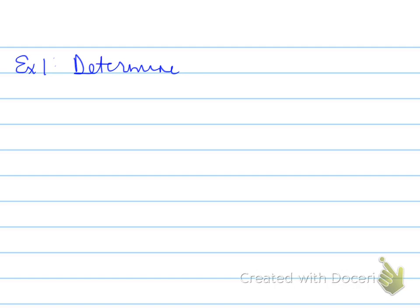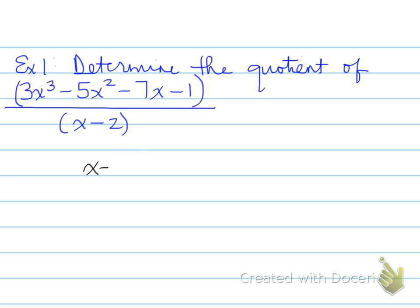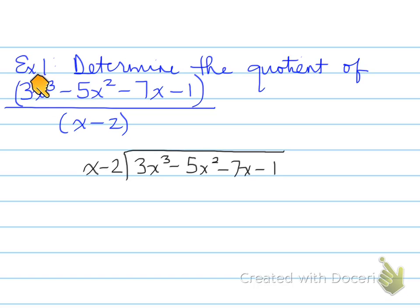Let's look at an example involving polynomials. Determine the quotient of 3x cubed minus 5x squared minus 7x minus 1, divided by x minus 2. We're going to use long division: divide x minus 2 into 3x cubed minus 5x squared minus 7x minus 1. You cannot just divide each term individually — when dividing polynomials with addition or subtraction, it must be the entire polynomial. We do not have an x minus 2 on top to cancel, so we divide the long way.